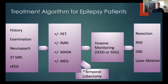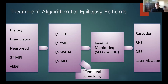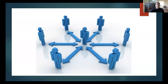Unlike other fields in neurosurgery — if you have a tumor, you can see it on the MRI and remove it; if you have an aneurysm, you know where it is and can clip it — epilepsy is a much more team-based approach. It's also very focused on each patient and tailoring the treatment approach to each individual, as you can see.